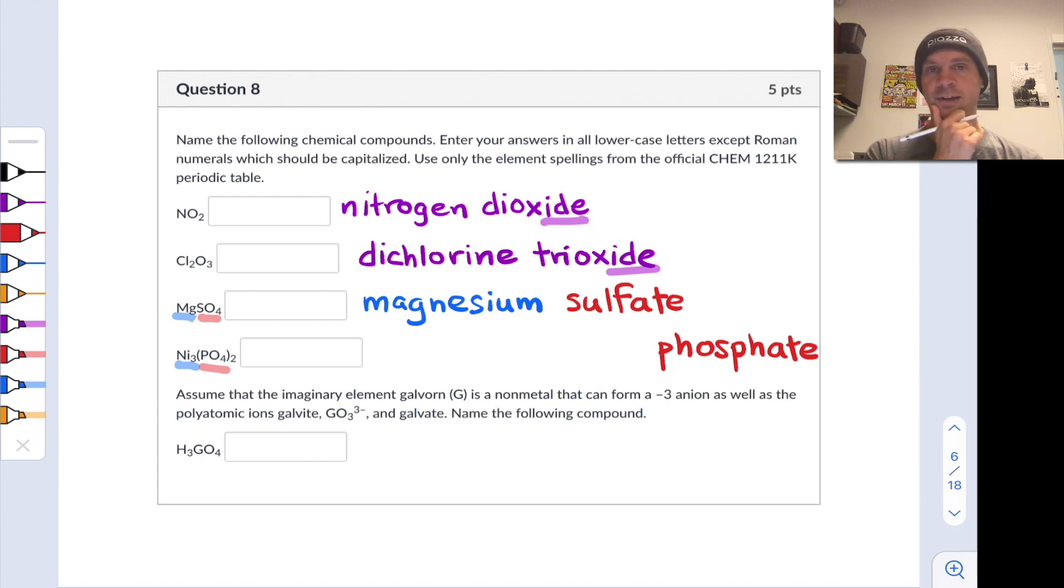In dealing with this compound, nickel is a transition metal and has access to multiple oxidation states. So we're going to need to use a roman numeral to indicate the oxidation state or charge of the nickel cation in this compound. In order to do that, we need to realize from our crib sheet, PO4 has a charge of negative three. So the total charge, the two PO4 minus anions is negative six. Each of those individually is negative three.